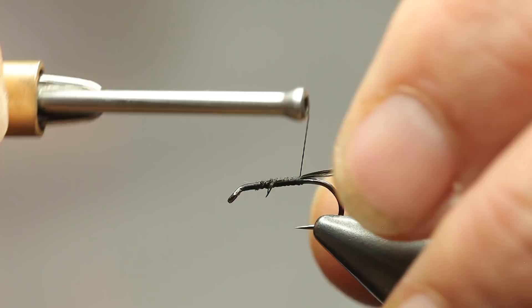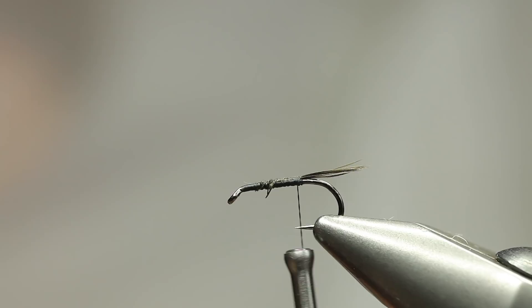And then what we're going to be using is nymph it, mostly used for river flies, but I've found it just adds that little bit to your stillwater flies as well.